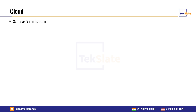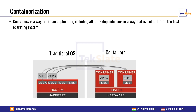Cloud is actually the same as virtualization, because if you want a virtual machine — an EC2 instance — you go to the AWS console, provide your requirements, and in the backend a virtual machine is created on bare metal and the EC2 instance is provided to you. So cloud is essentially a concept of virtualization. Now let us look at containerization and how these problems are solved.